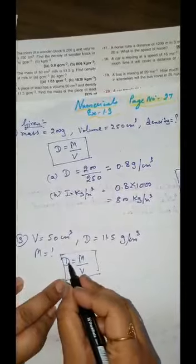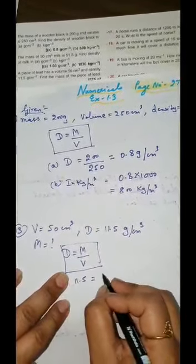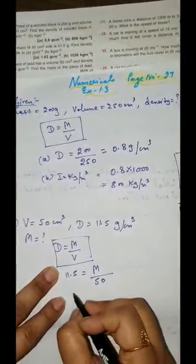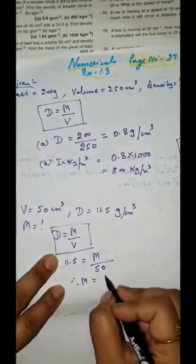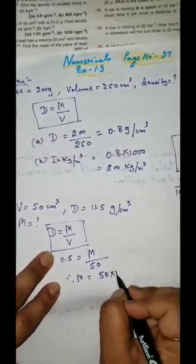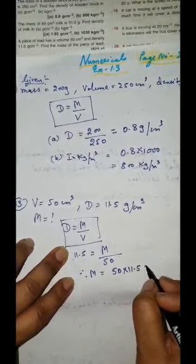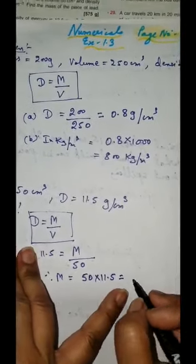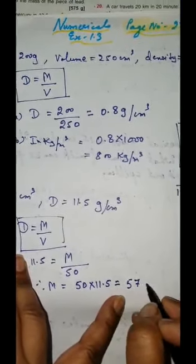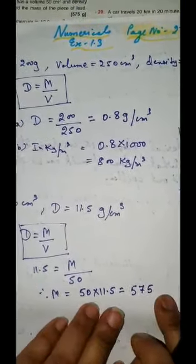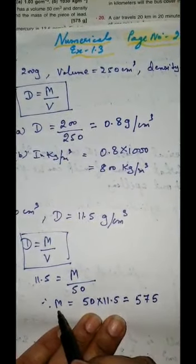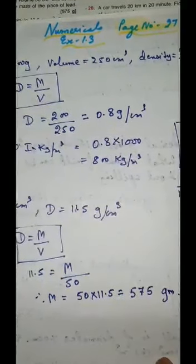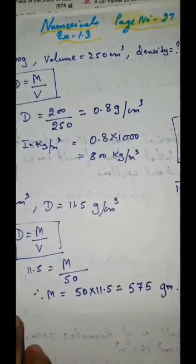Again the same formula: density is equal to mass upon volume. Put the value — in place of density, 11.5 is equal to mass upon volume 50. Therefore mass is equal to 50 multiplied by 11.5. When you do the calculation it will come 575. Now coming to the unit — it is mass, mass is given in gram, so unit is gram. Unit is very very important.